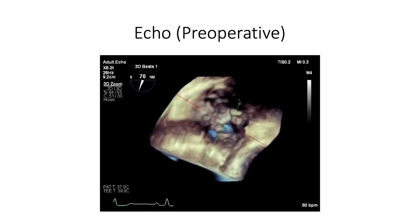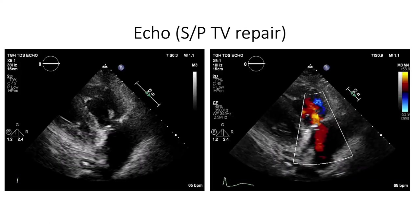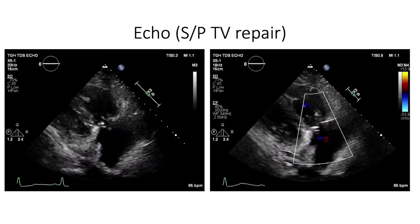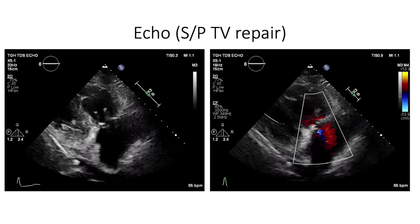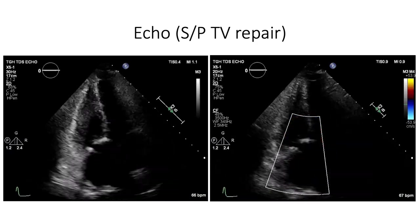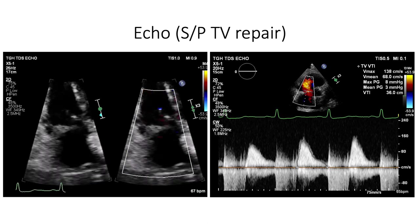A 3D echo demonstrates the tricuspid valve coaptation defect. In the OR, this patient was found to have scarred right atrial tissue from previous ablation, with very thinned and dilated right atrial wall, leading to a severely dilated tricuspid valve annulus. The patient underwent tricuspid valve repair in the form of banded annuloplasty using a Simplicity band. The post-repair echo in right modified parasternal long axis demonstrates normal leaflet motion, no significant residual TR, good biventricular function, and no significant transvalvular gradient with a mean of 3 and peak of 8.